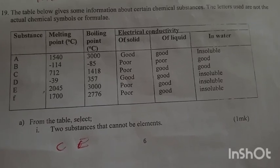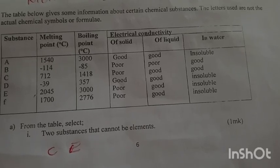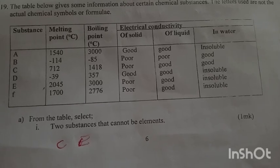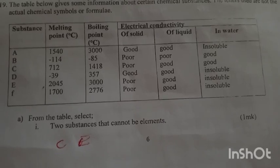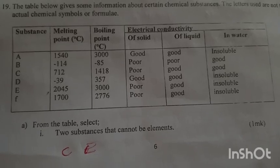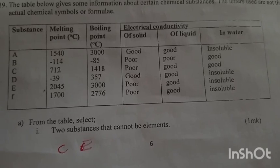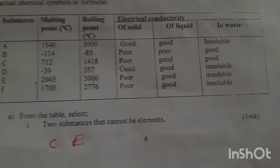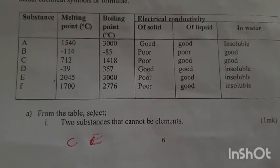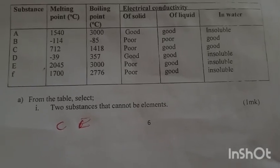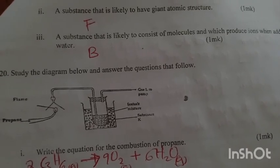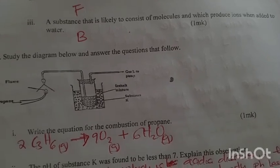The table gives information about certain chemical substances. The letters are not the actual symbols of the elements. Which two substances cannot be elements? C and E, because they conduct electricity when in liquid and when in solution. A substance that is likely to have giant atomic structure? F. A substance that is likely to consist of molecules which produce ions when added to water? B.